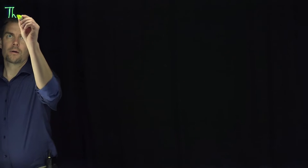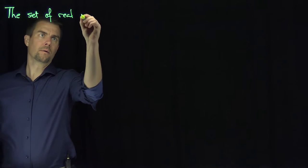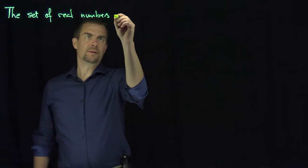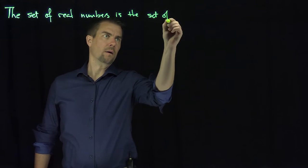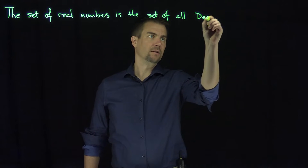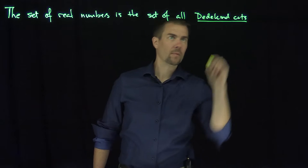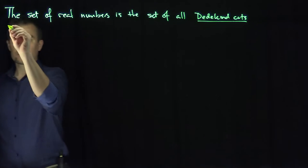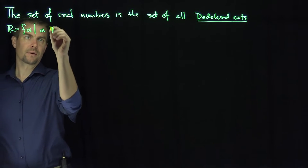Hello, students. In this video, we'll construct the set of real numbers using our notion of Dedekind cuts. The set of real numbers is the set of all Dedekind cuts. In other words, we set R to be the set of alpha such that alpha is a Dedekind cut.